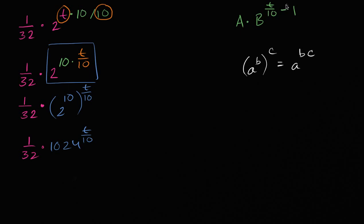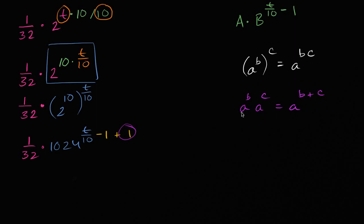So it seems like we're getting close. If there was no minus 1 here, we'd essentially be done. But there's this minus 1, so how do we deal with that? We can do a similar strategy — we can subtract 1 and then add 1 to the exponent. We're not actually changing the value, just as multiplying by 10 and dividing by 10 didn't change the value. We want to leave the minus 1, but we need to get rid of the plus 1 somehow. We have to remind ourselves that a to the b times a to the c equals a to the b plus c.